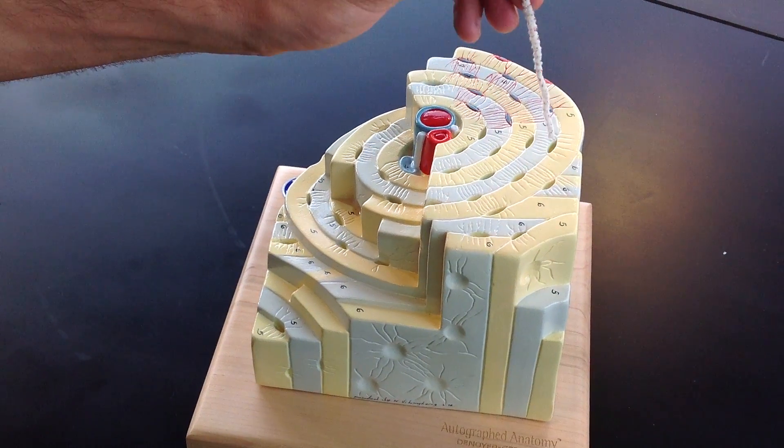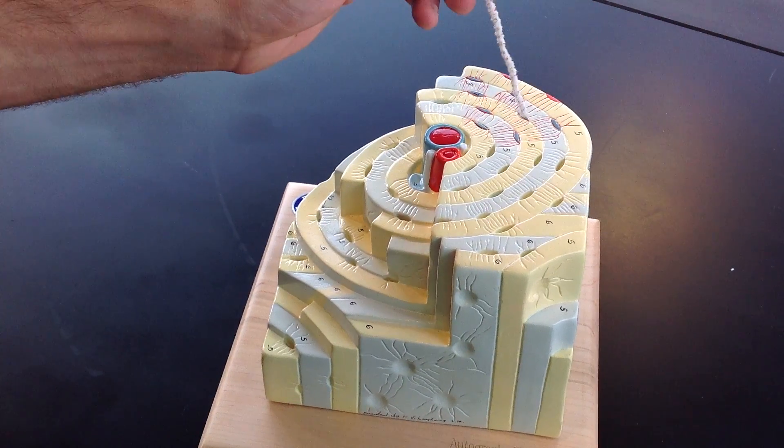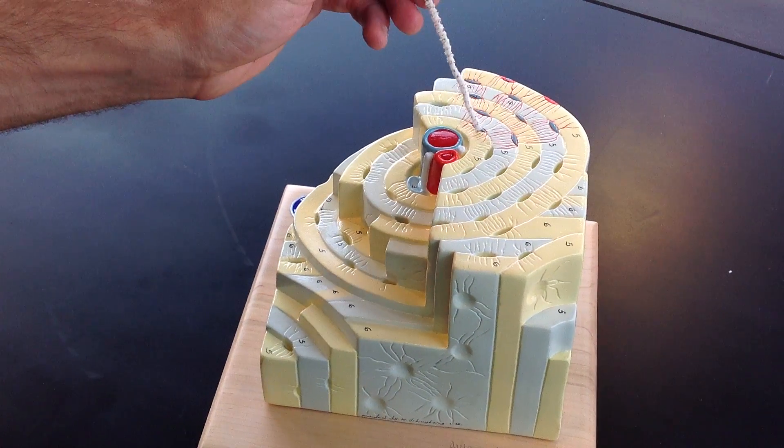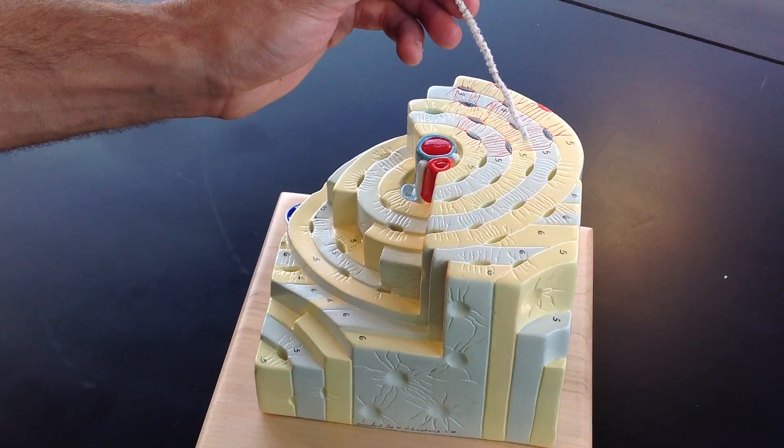Now these divots that you see are going to be lacunae and they house osteocytes which are shown in blue right here. So osteocytes live in lacunae.